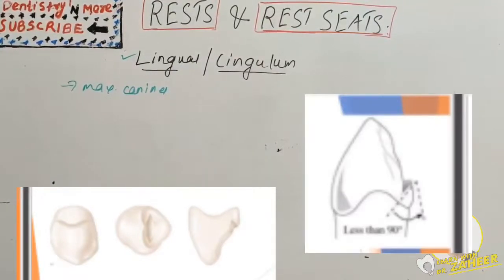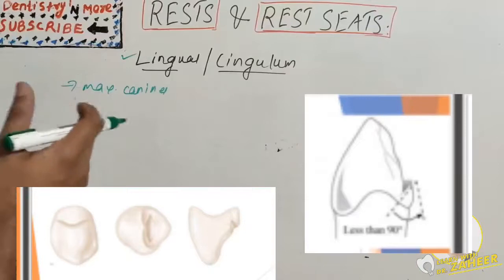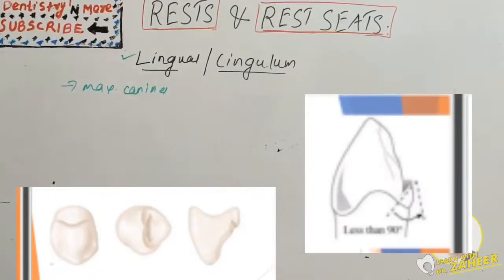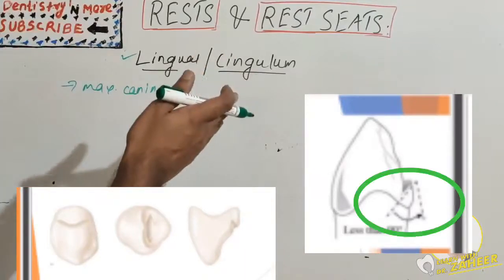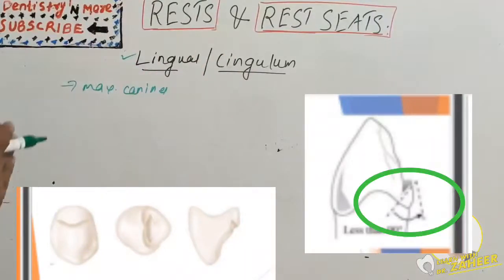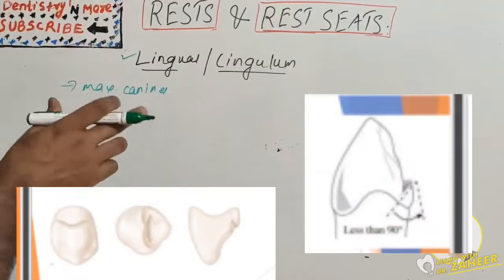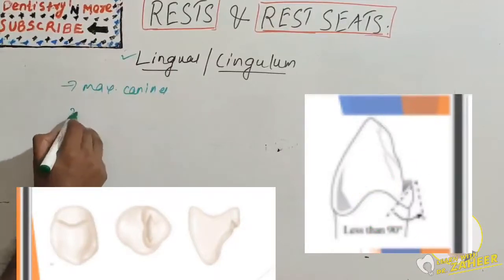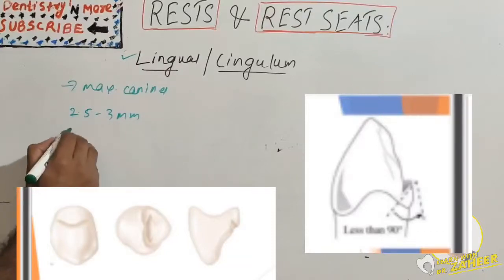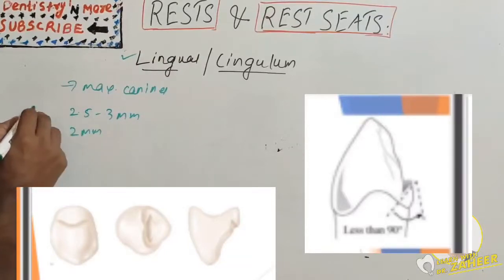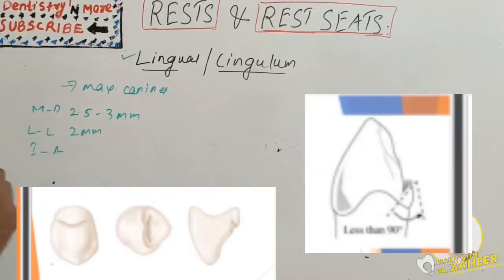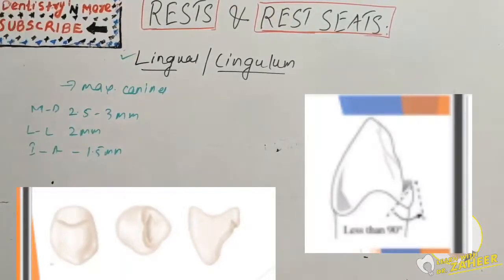The outline form of the lingual rest seat is a slightly rounded V prepared on the lingual surface at the junction of the gingival and middle one-third of the tooth. The apex of the V is directed incisally. The floor of the rest seat should be less than 90 degrees. The mesiodistal length of the preparation should be a minimum of 2.5 to 3 mm, the labiolingual width about 2 mm, and the inciso-apical depth a minimum of 1.5 mm.